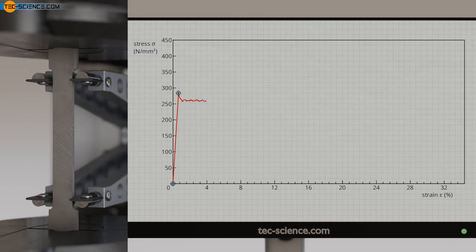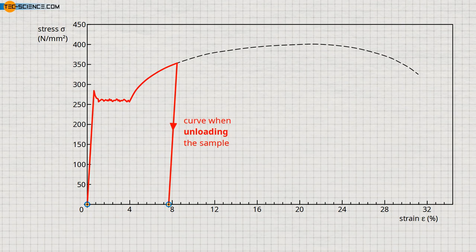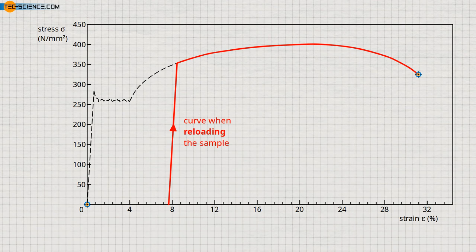Once the specimen has been stretched beyond the Lüter strain, the yield-point phenomenon no longer occurs after the specimen has been unloaded and the tensile test has been repeated in a timely manner. This is because the dislocations have already detached from the Cottrell atmospheres and are therefore free to move anyway.